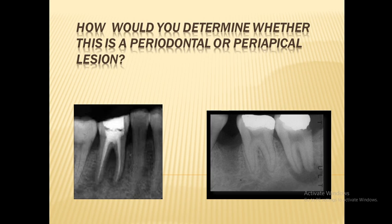A patient comes to the clinic with pain in the lower premolar. She has a radiograph that shows a periapical radiolucency and loss of bone height. Our question today is: how would you determine whether this is a periodontal or a periapical lesion?